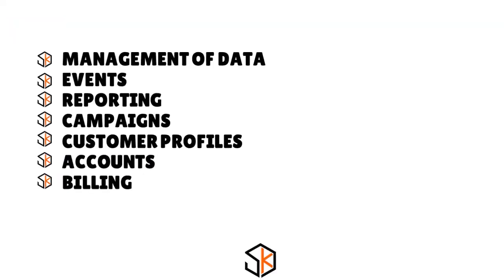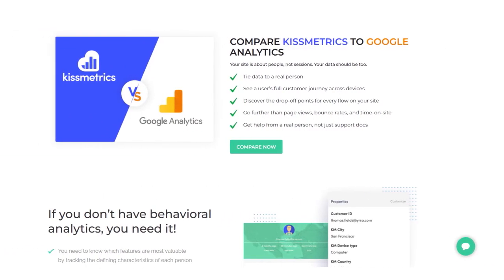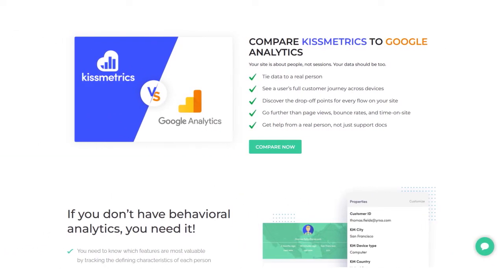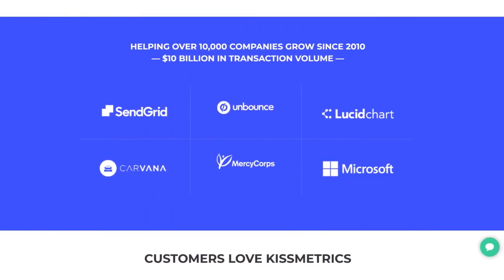Kissmetrics has a centralized platform to analyze, engage, and categorize audiences. Features include management of data events, reporting, campaigns, customer profiles, accounts, and billing. It helps users increase conversion rates by providing metrics on product sales, and provides real-time insights into industry trends.